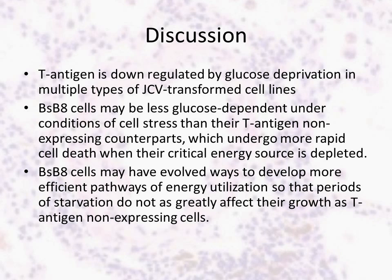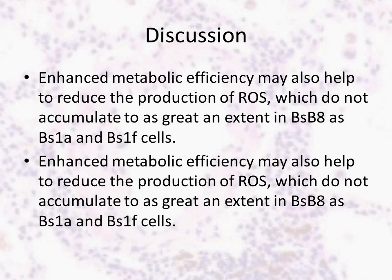Alternatively, BSBH cells may have evolved more efficient pathways of energy utilization so that periods of starvation do not as greatly affect their growth as T antigen non-expressing cells. In this sense, BSBH cells may be less glucose dependent under conditions of cell stress than their T antigen non-expressing counterparts, which undergo more rapid cell death when their critical energy source is depleted. Regulation of glucose metabolism continues to represent one of the most significant alterations in tumor cells compared to normal cells.